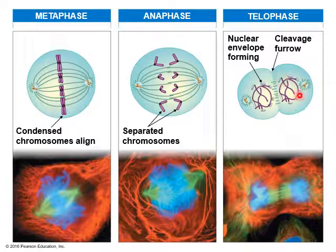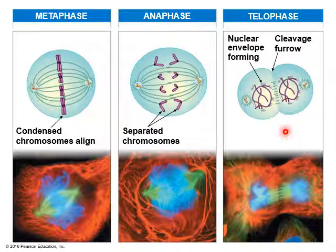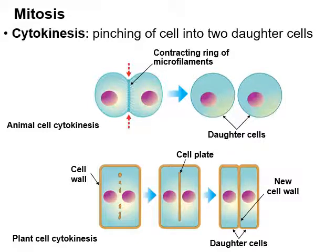In telophase, the nucleus starts to reform. Two new nuclei form around the DNA on each side of the cell. At the same time telophase is happening, cytokinesis occurs. The prefix 'cyto' refers to cytoplasm — the fluid inside the cell — and cytokinesis refers to the splitting up of that fluid, essentially taking one cell and dividing it into two daughter cells, splitting apart all the cytoplasm and organelles inside.